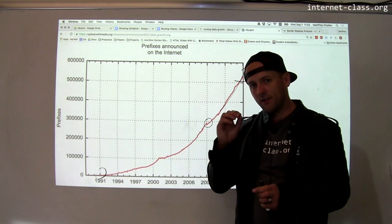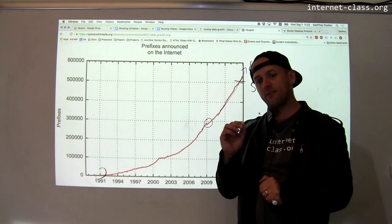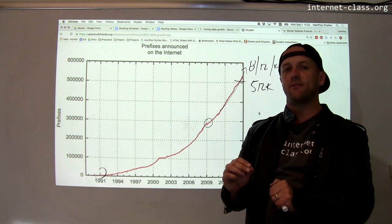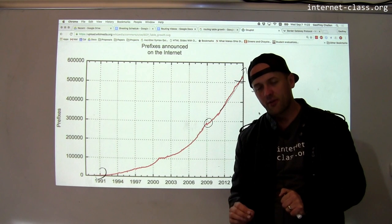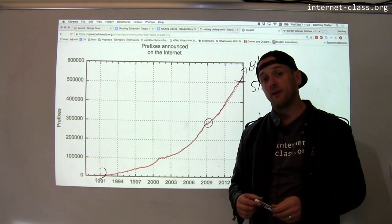So this is an interesting example of how one of these fundamental parts of the internet, these routing decisions that have to get made really quickly, if those slow down a little bit, large parts of the internet can be affected.